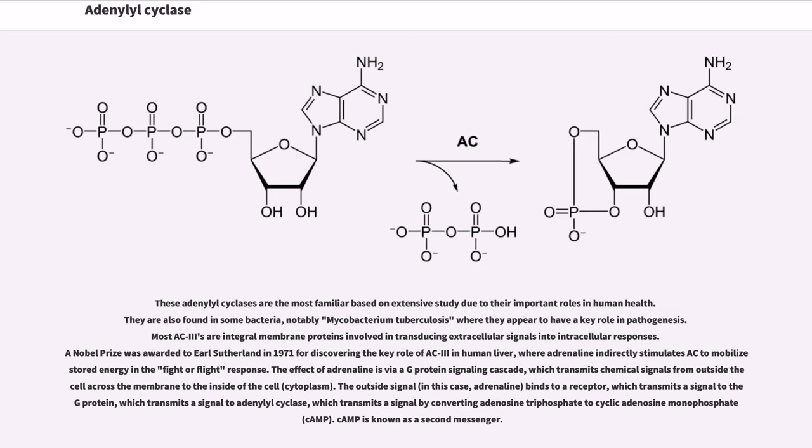The effect of adrenaline is via a G-protein signaling cascade, which transmits chemical signals from outside the cell across the membrane to the inside of the cell (cytoplasm). The outside signal, in this case adrenaline, binds to a receptor, which transmits a signal to the G protein, which transmits a signal to adenylyl cyclase, which transmits a signal by converting adenosine triphosphate to cyclic adenosine monophosphate cAMP. cAMP is known as a second messenger.